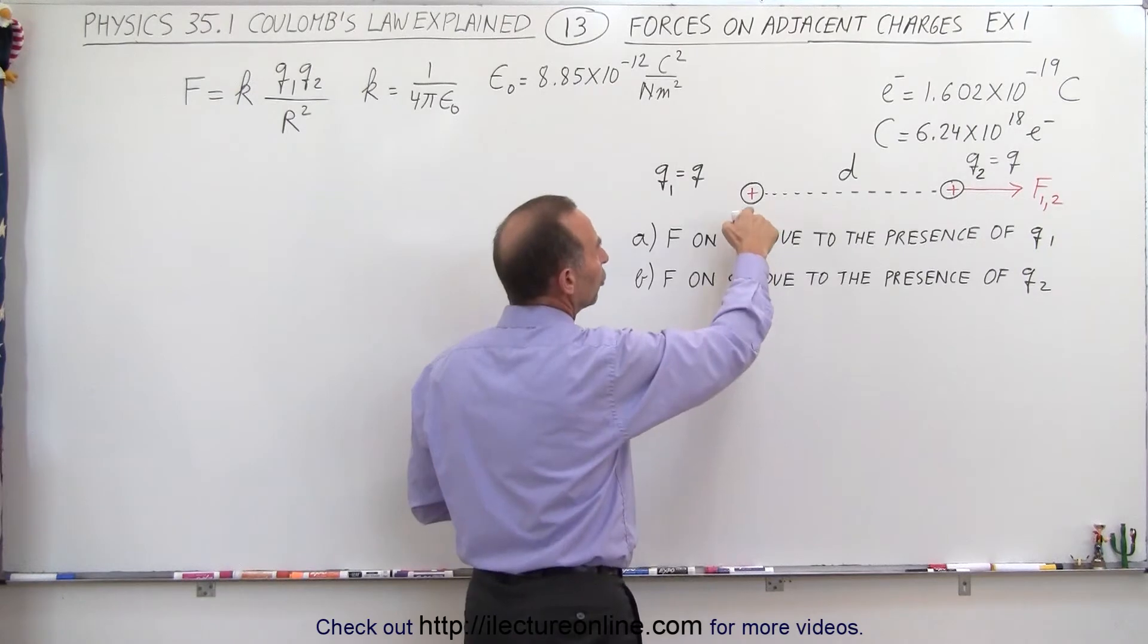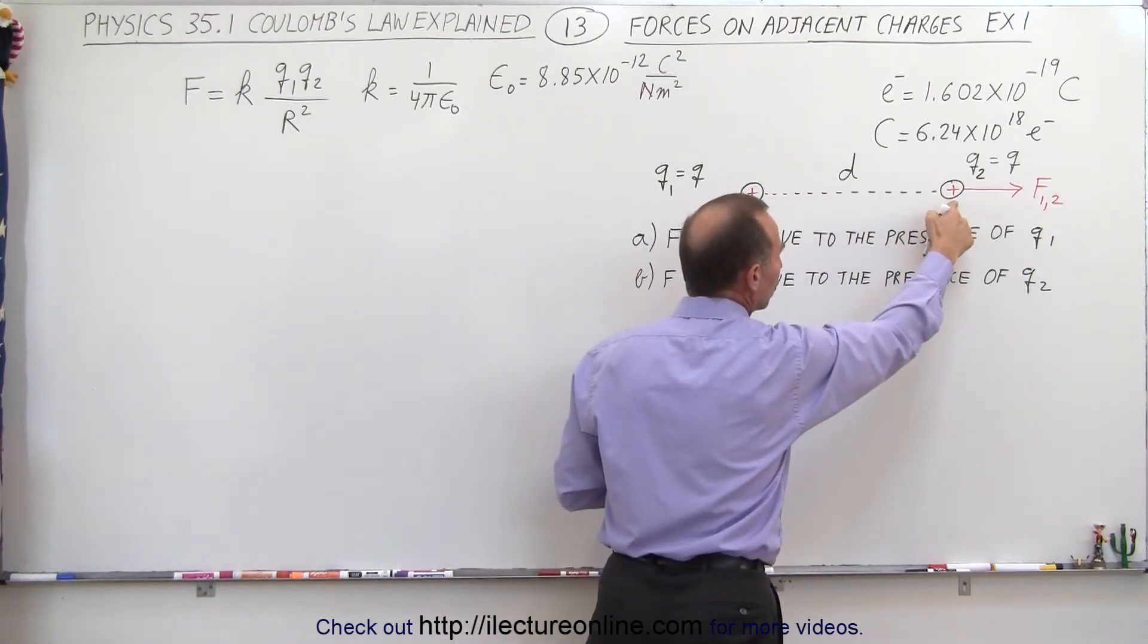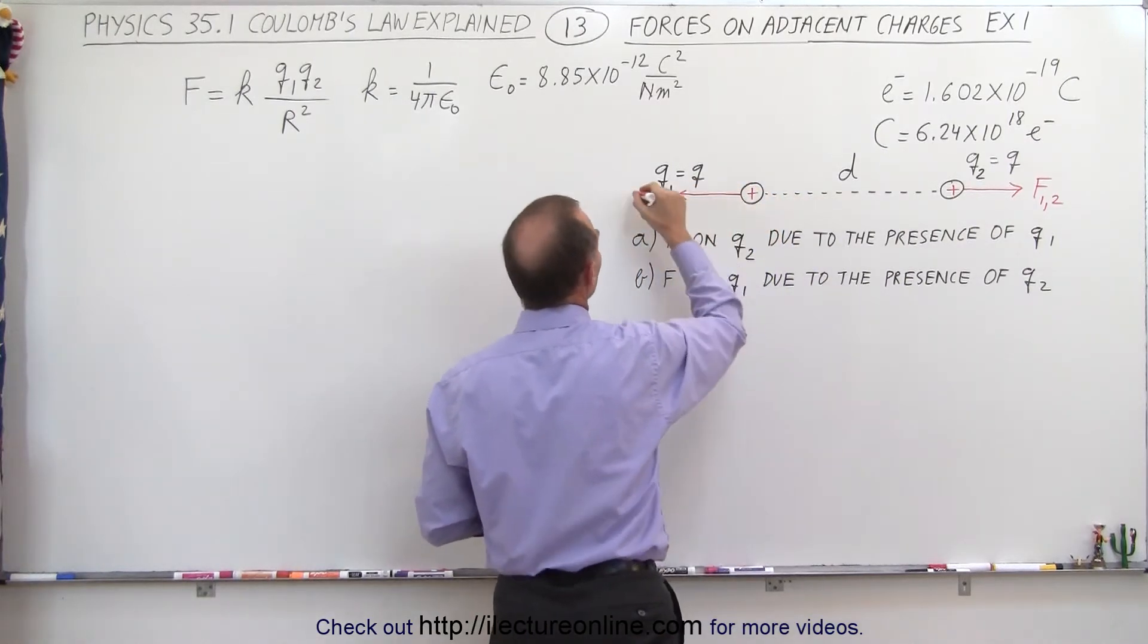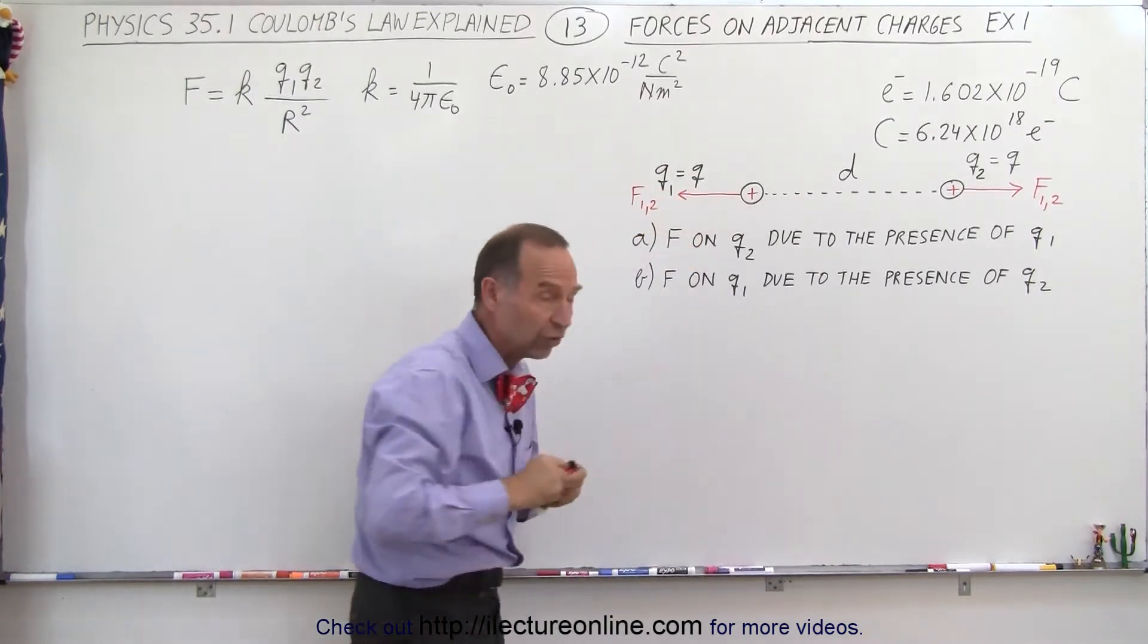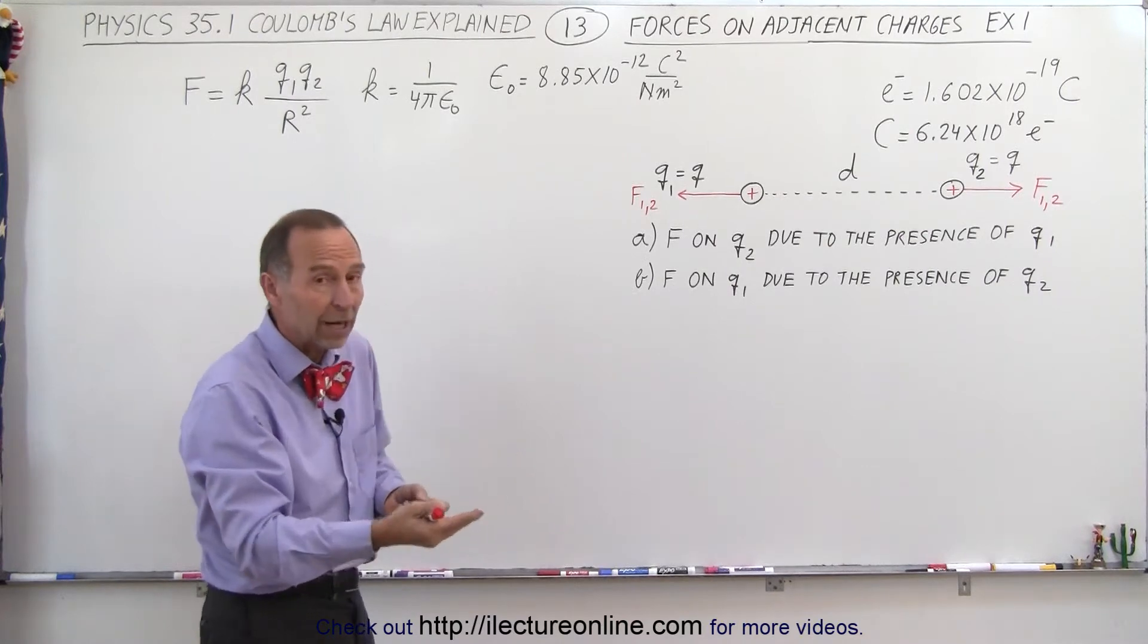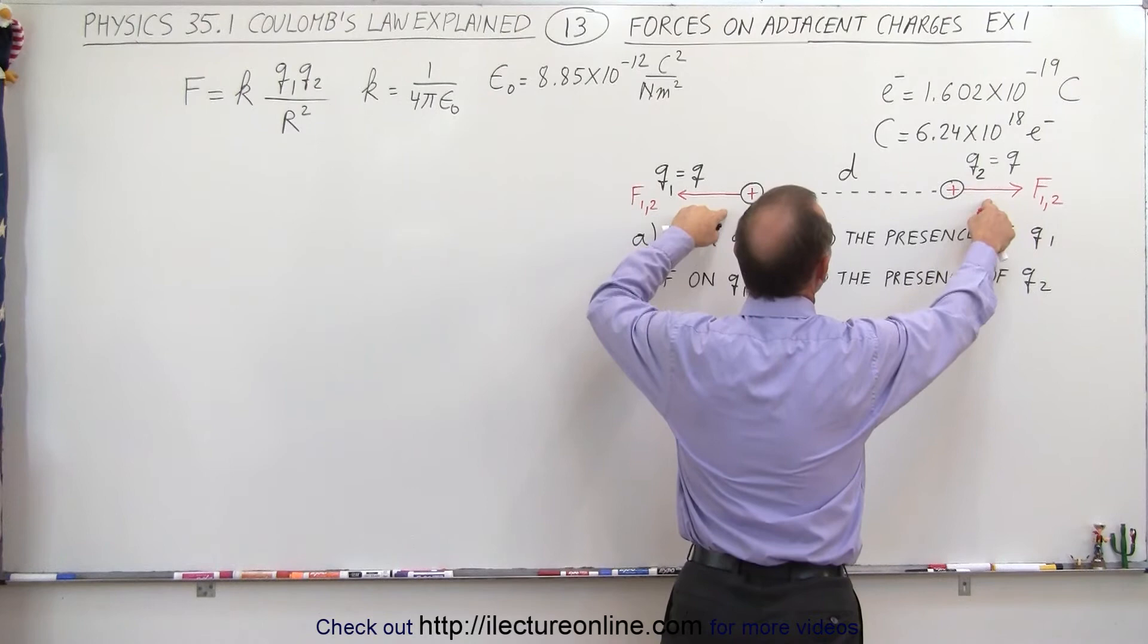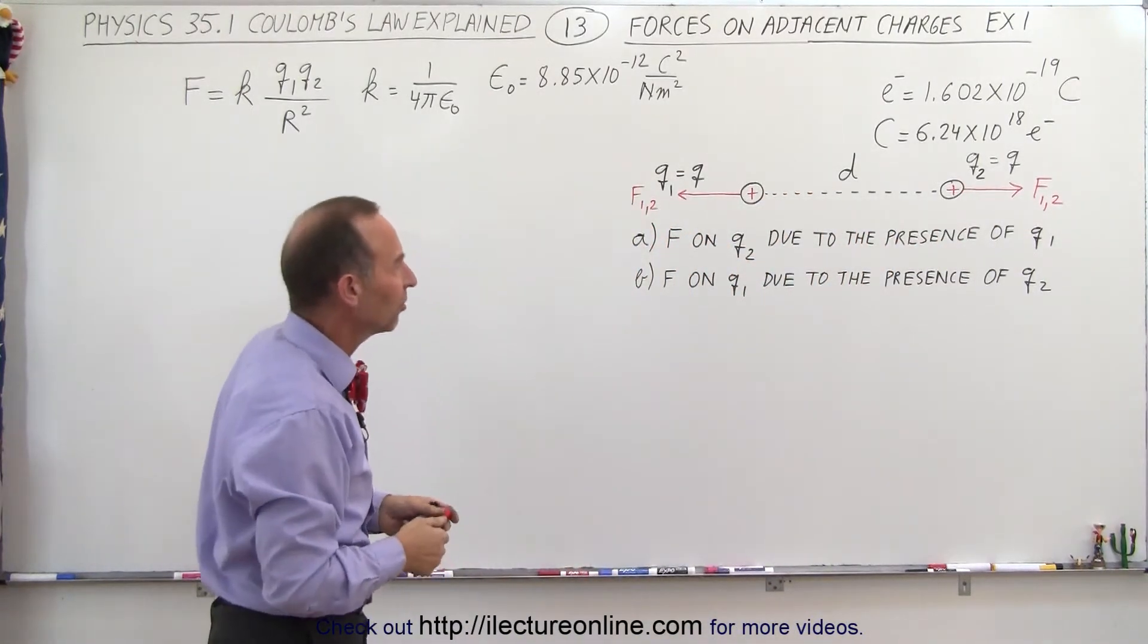Now q1 is also going to feel a force of repulsion because of the presence of q2, and that force is going to be pointing in this direction. And it turns out, using Newton's third law, for every action there's an equal and opposite reaction, the magnitude of these two forces are equal, it's just that the direction of the forces is in opposite directions, so at least the magnitude would be the same.